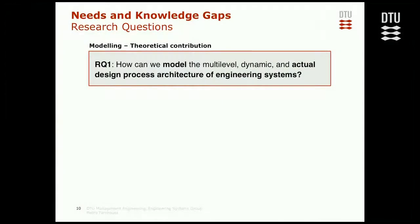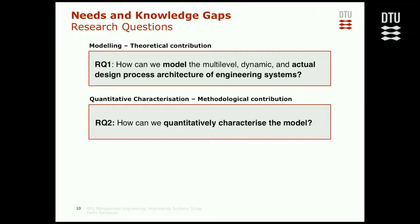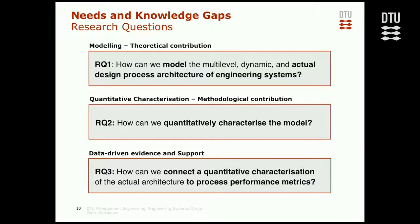In terms of research questions, the first is about modeling — the theoretical contribution. The question is: how can we model the multi-level, dynamical, and actual design process architecture of engineering systems? The second question is about a quantitative characterization — a methodological contribution — asking how we can quantitatively characterize the model and break it down into numbers. Then the 'so what' question is about data-driven evidence and support: how can we connect this quantitative characterization of the actual architecture to process performance metrics?